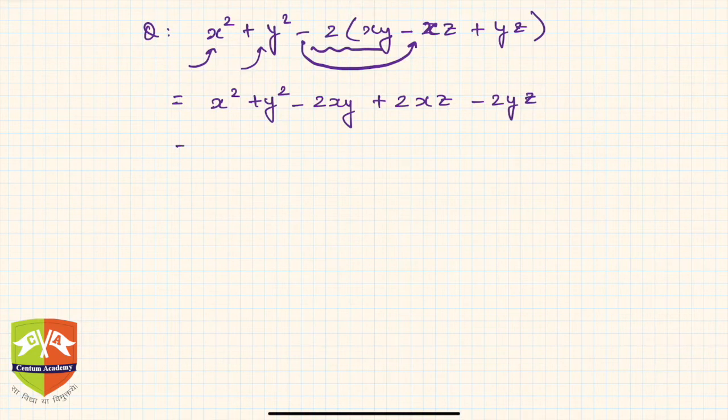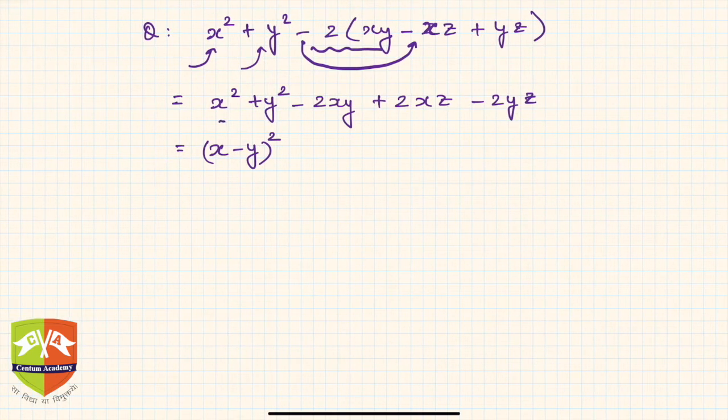So what is it now? If you see, this is nothing but (x - y)². And this is an indication that I must get another (x - y) from the leftover terms as well. See whether it is possible. Yes, it is very much possible because 2 and z are common in both of them.